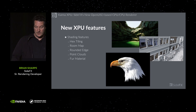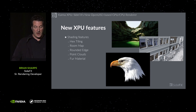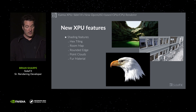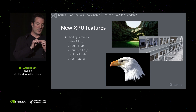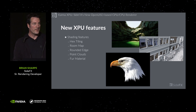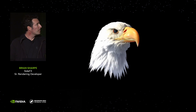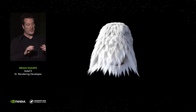We've added a bunch of shading features as well. That includes hex tiling, which is a nice way to tile a texture over a surface without it appearing repetitive. We have a room mapping tool, which creates a parallax-correcting room effect, useful for buildings and cityscapes. We now support rounded edges as well as point clouds. We also have a new fur material, which extends the existing hair material to handle physically correct fur — including things like the medulla, which is a small cylindrical structure within the hair strand itself. We've seen some cool things people are doing with the fur material, such as this eagle, where the fur BSDF has been used for the barbs on the feathers.